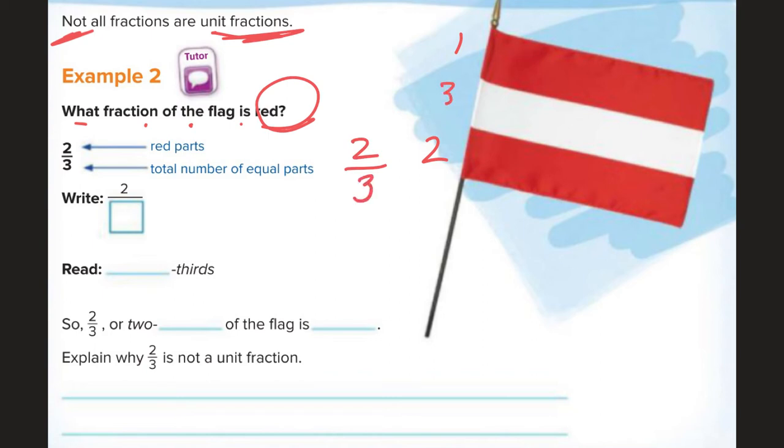Out of three total rectangles, right? Two out of three are red. So, that'd be, we'd say that as two-thirds. So, two-thirds, or two-thirds, oops, I-R-D-S, of the flag is red.